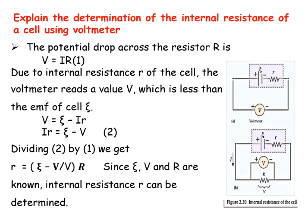We know the potential difference from Ohm's law: for the external resistance, V = IR. At the same time, due to the internal resistance r of the cell, the voltmeter reads a value V which is less than the EMF psi. We can write: ψ = IR + Ir. Dividing the two equations, we get the internal resistance: r = (ψ − V) / V × R.